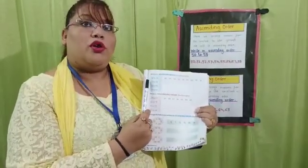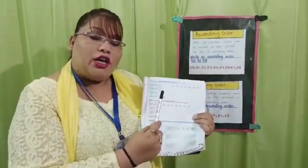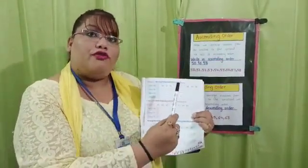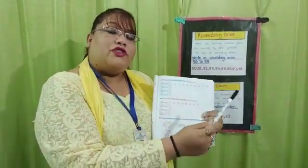We can also get this as: write numbers from 60 to 50. So we'll write it in ascending order as 50, 51, 52, 53, 54, 55, 56, 57, 58, 59, 60.